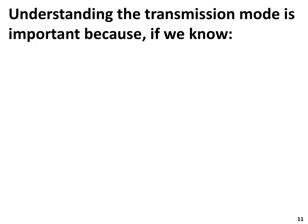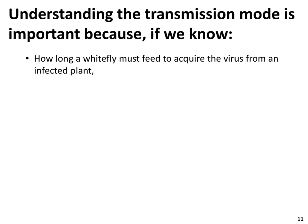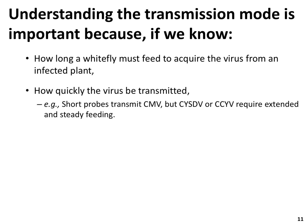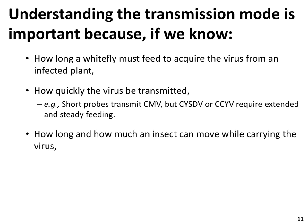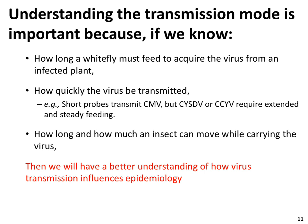Understanding the transmission mode of a virus is important. This helps us gauge how long a whitefly must feed to acquire the virus from an infected plant, as well as how quickly the virus can be transmitted. For example, short probes transmit cucumber mosaic virus — a non-persistent virus — but semi-persistently transmitted viruses such as CYSDV or CCYV require extended and steady feeding for efficient transmission. Understanding how a virus is transmitted gives us an idea of how long and how far an insect can move while carrying the virus, which helps scientists understand epidemiology — very important for developing management strategies.